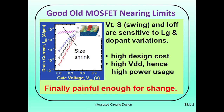Relentless scaling of planar MOSFETs over the past four decades has delivered ever-increasing transistor density and performance to integrated circuits. However, continuing this trend in the nanometer regime is very challenging due to a drastic increase in subthreshold leakage currents, or off-currents. Due to very narrow channel lengths in deeply scaled MOSFETs, the drain potential begins to influence the electrostatics of the channel, and consequently the gate loses adequate control over the channel.